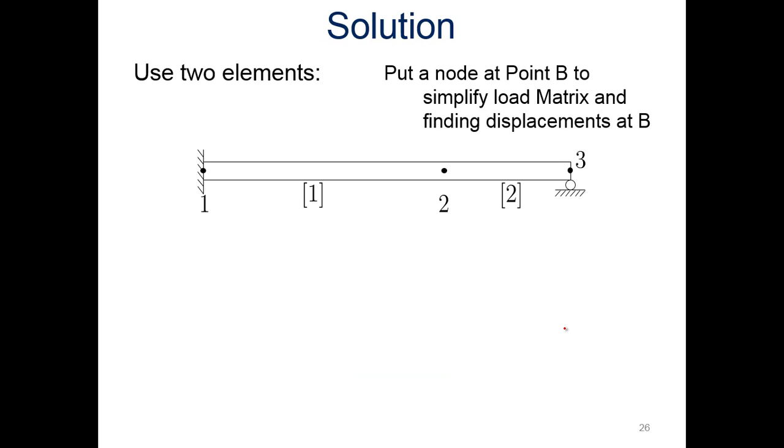If we look at the solution, first of all we got to break this sucker up. We got to discretize this thing. So we're gonna have one element between nodes one and two, and another element between nodes two and three. Put a node at point B to simplify the load matrix, because we want to find the deflection at node two, so we might as well do it right there, and that's where the forces change as well.